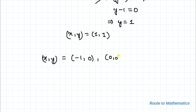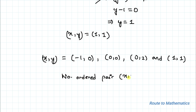From the above cases we found the solutions (x, y) equals (minus 1, 1), (0, 0), (0, 2), and (1, 1). We were asked to find the number of ordered pairs of (x, y), so the answer is four ordered pairs. I hope you have understood the solution. Thanks for watching — please subscribe to my channel and click the bell icon for more such interesting videos. Thank you.